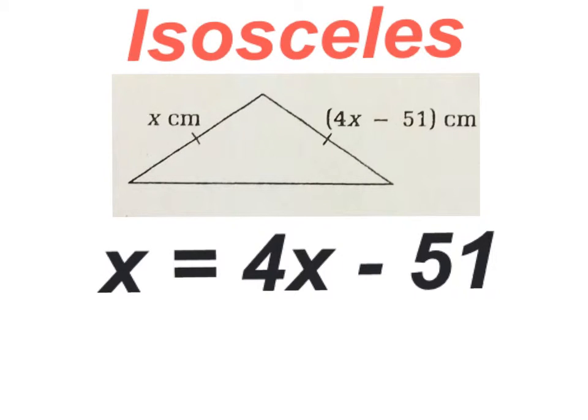So because the triangle is isosceles, I can easily take this side over here on the left hand side, x, and then set it equal to the side over here on the right, which is 4x minus 51. And now I'm in business. Now it is ready to be solved.